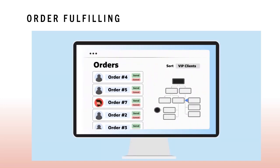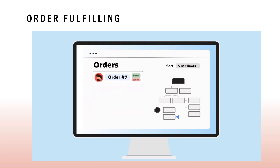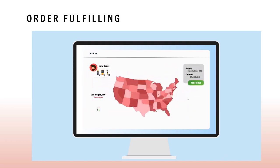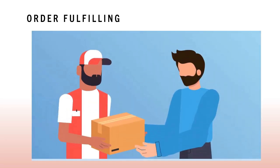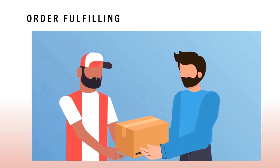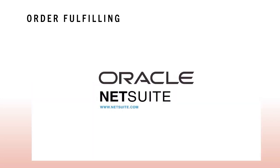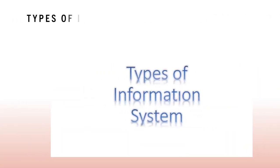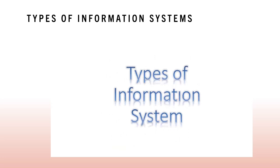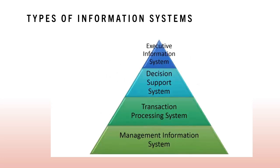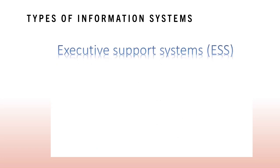Fulfilling a customer order involves a complex set of steps that requires the close coordination of the sales, accounting, and manufacturing functions. Now that you understand business processes, it is time to look more closely at how information systems support the business processes of a firm. Let us check the types of information systems.